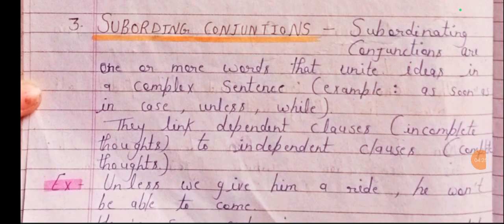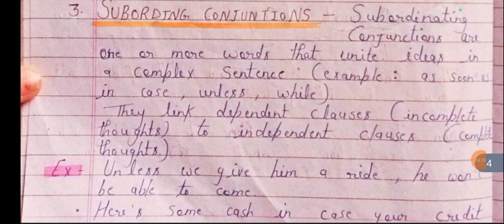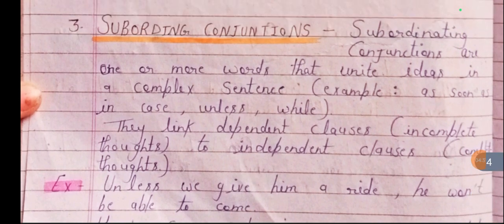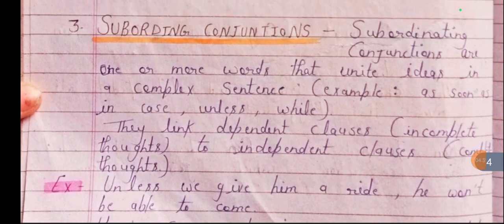Third is subordinating conjunctions. Subordinating conjunctions are words that unite ideas in a complex sentence. For example: as soon as, in case, unless, while. They link dependent clauses to independent clauses.